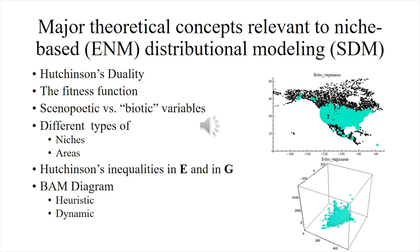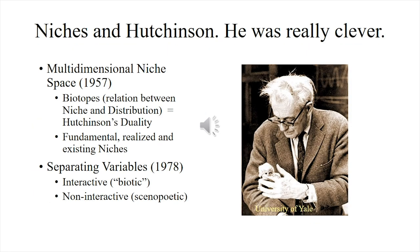The main theoretical ideas I will be discussing with you are Hutchinson's duality, the fitness function, the difference between xenopoetic versus biotic variables, that there are different types of niches and areas and how they are related in terms of Hutchinson's inequalities, and finally the BAM diagram in its heuristic form and some of its dynamic forms. A lot of the ideas that we will be discussing were originally either fully proposed or just mentioned by George Evelyn Hutchinson — including the relationship between niches and distributions, the multidimensional niche space, the difference between fundamental, realized, and existing niches, and the distinction between interactive versus non-interactive variables.